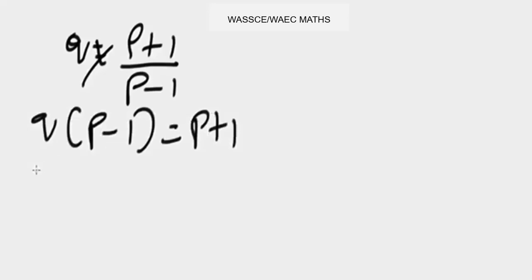Now let's simplify. We're going to have qp minus q equals p plus one. Remember we are asked to make p the subject of the formula. So to begin with, you collect like terms - the ones that have p in common will come together. To do that, this p crosses the equality sign, I get negative p, and this minus q crosses over and changes to positive q.